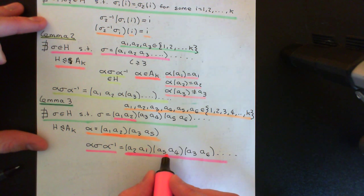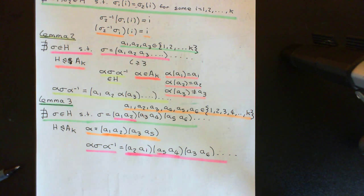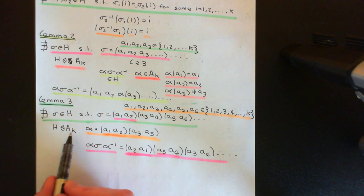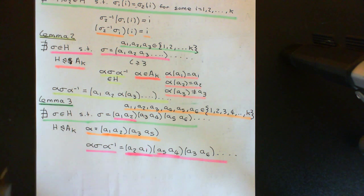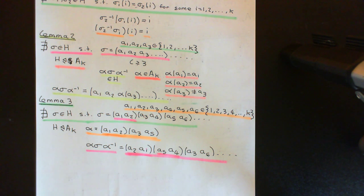So here is alpha sigma alpha^{-1}. The (a1, a2) cycle is exactly the same as before — a1 goes to a2, a2 goes to a1, that hasn't changed. But it is a different element because a5 now goes on to a4 rather than to a6. So this is a different element from sigma, but it must be in H since H is a normal subgroup. Yet it breaks the corollary to Lemma 1 because a1 goes to a2 exactly as sigma does — two elements in H send a1 to the same thing, which is a contradiction.